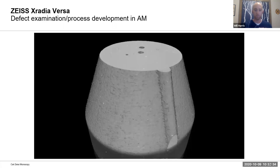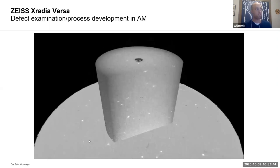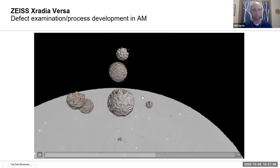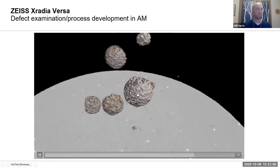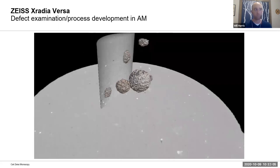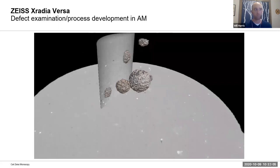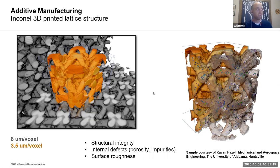Depending on how you move your laser or electron beam around as you melt your powder, you may get things like voids, cracks, or stresses. It can be useful to create test pieces, scan them, and look for these types of defects — in this case there are huge voids which were somewhat intentional. You can nonetheless characterize their distribution and shape, and how they affect the rest of the 3D volume. This is an example of a 3D-printed lattice made of Inconel alloy, with labels showing the micro-pores within the struts.